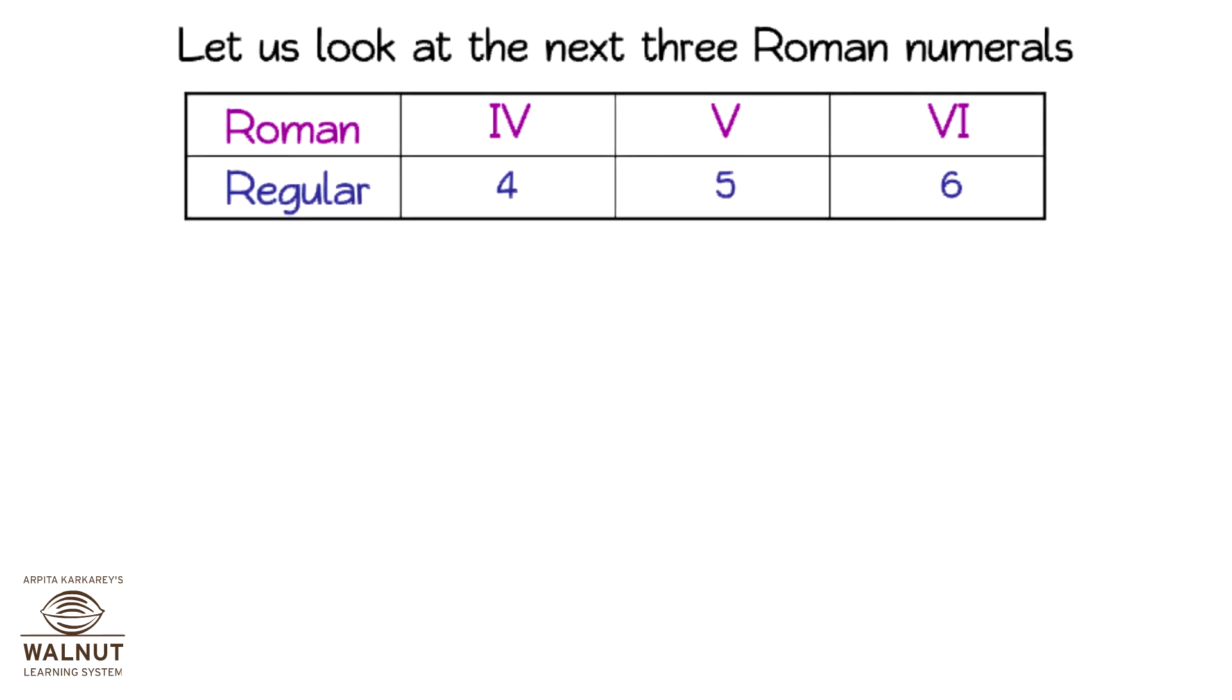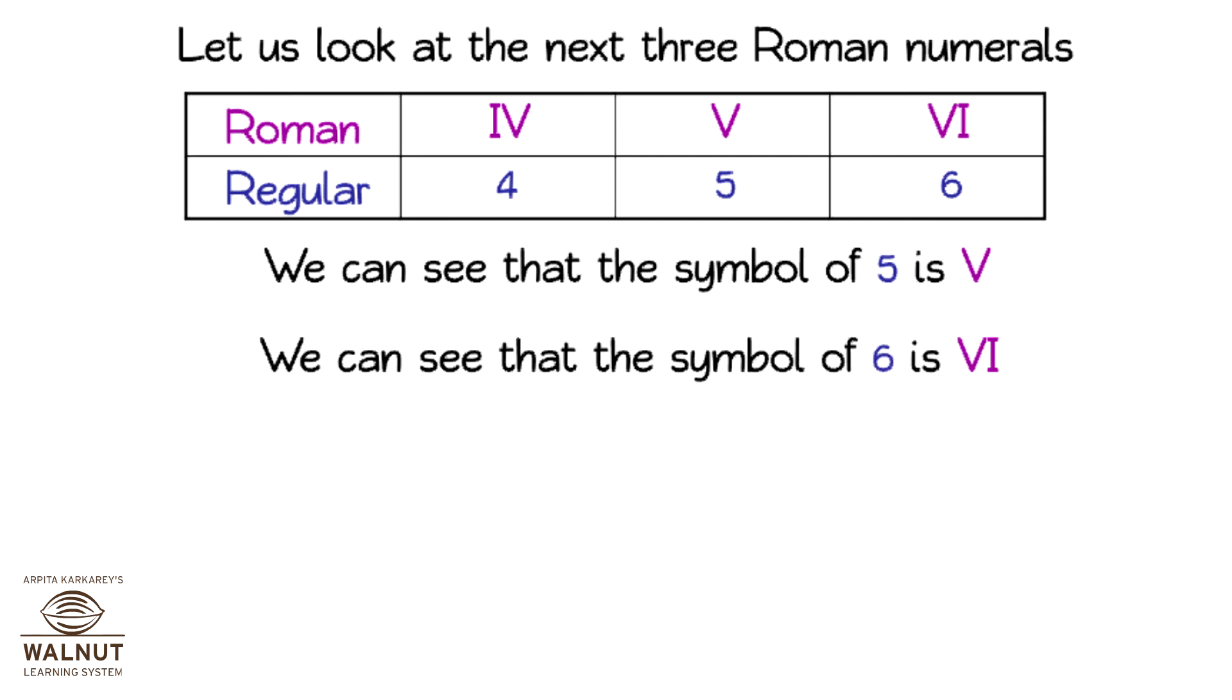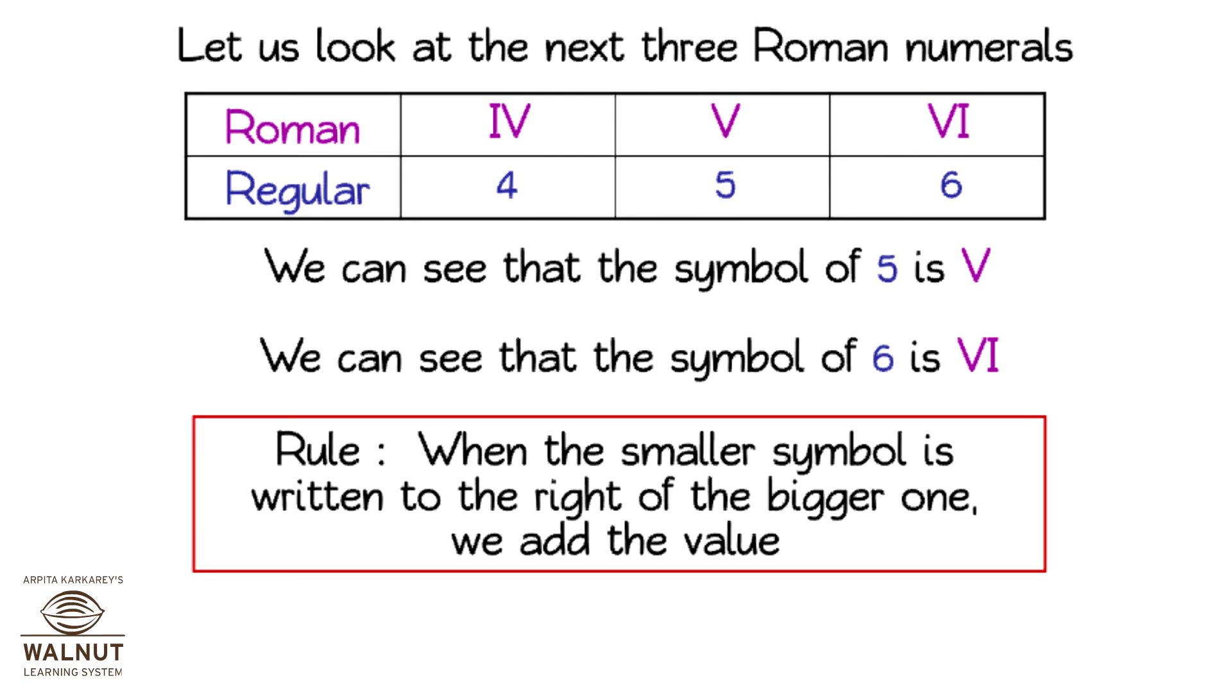Let us look at the next three Roman numerals. We can see that the symbol of 5 is V. We can see that the symbol of 6 is VI. When the smaller symbol is written to the right of the bigger one, we add the value. So, VI means 5 plus 1 is equal to 6.